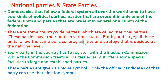Democracies that follow a federal system all over the world tend to have two kinds of political parties — parties that are present in only one of the federal units, and parties that are present in several or all units of the federation. There are some countrywide parties which are called national parties. These parties have their units in various states, but by and large all these units follow the same policies, programs and strategies decided at the national level.